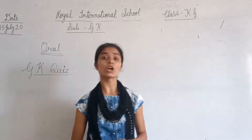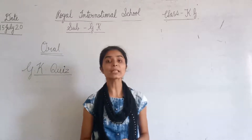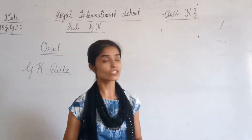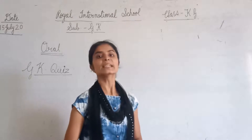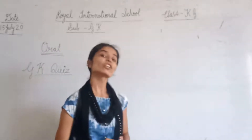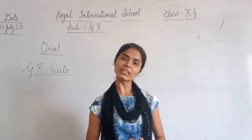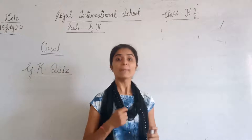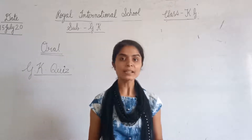Question number one: What is your school name? Tell me. My school name is Royal International School. Speak with me: My school name is Royal International School. If someone asks you what's your school name, you say: My school name is Royal International School. Is that clear?